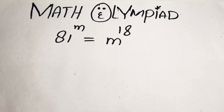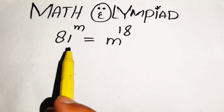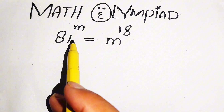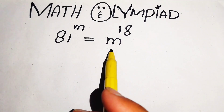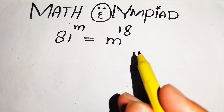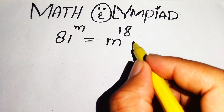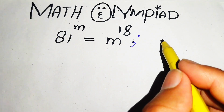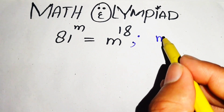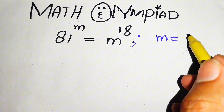Hello everyone, welcome. We will solve this Math Olympiad exponential equation problem. Here we have 81 to the power of m equals m to the power of 18, and we solve this problem for the values of m.